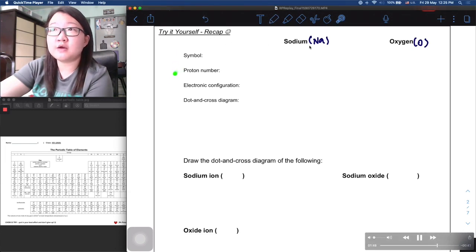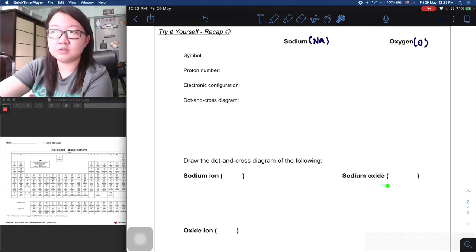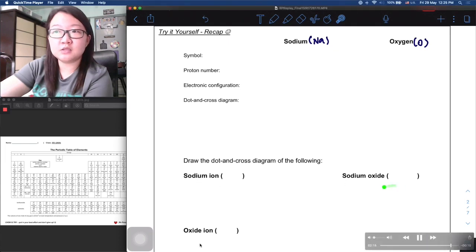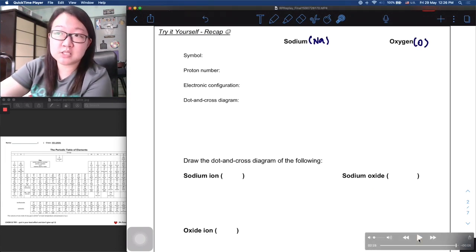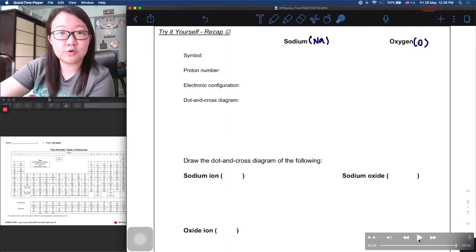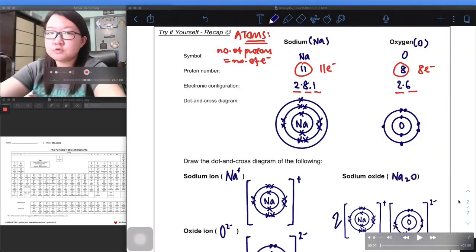Here you have the elements sodium and oxygen. I need you to think through what are the symbols, proton number, electronic configuration, as well as the cross diagram which you should be very familiar with now. Then after that, move on to draw the dot and cross of the corresponding ions. And then finally, think through how you will draw the ionic compound, which is sodium oxide. When the cation as well as the anion comes together, it will form an ionic compound. Think about how you will draw the dot and cross diagram. Take it as a quick recap of chapter 6, which is chemical bonding. Then you can resume this video and we will go through the answers.